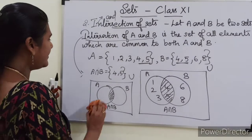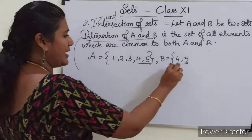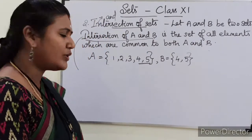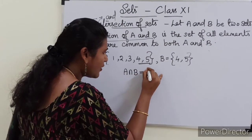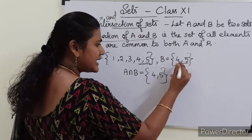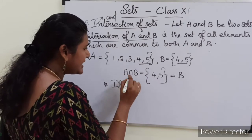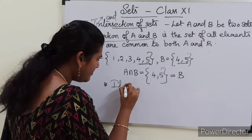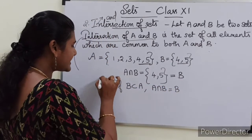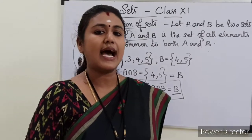Now we will consider another example. Let B be equal to {4, 5} — these two elements alone. So A intersection B is equal to the common elements, that is {4, 5}. Here if you see, the intersection is the set B itself. That is one important point: if B is a subset of A, then A intersection B will be B. That is, if a set B is a subset of A, then the intersection of the two sets will be the subset.